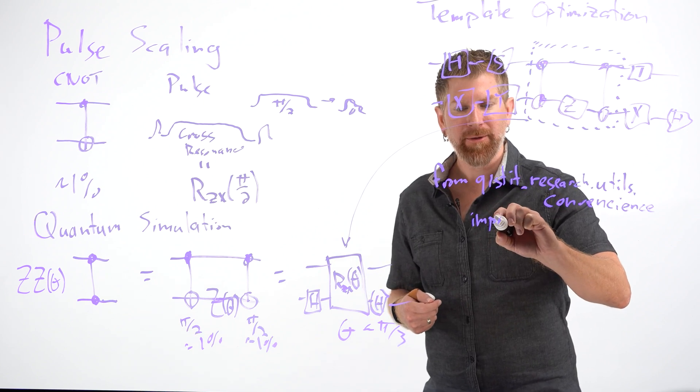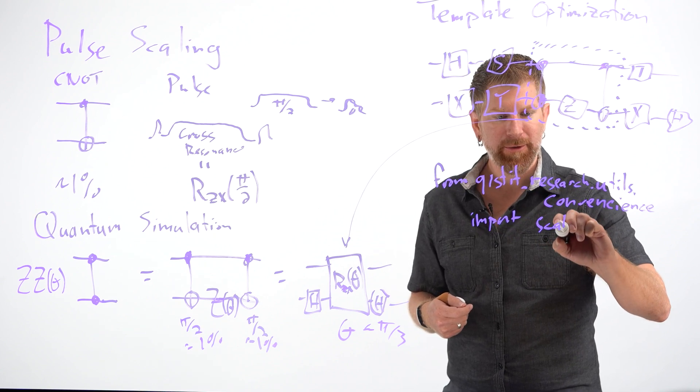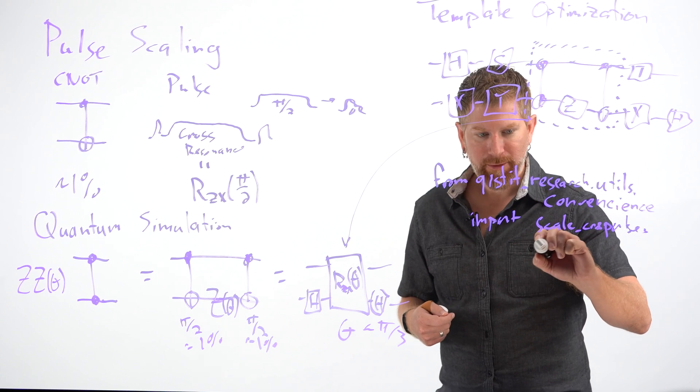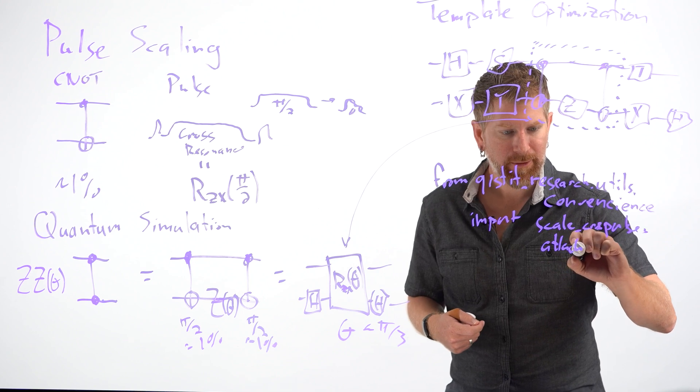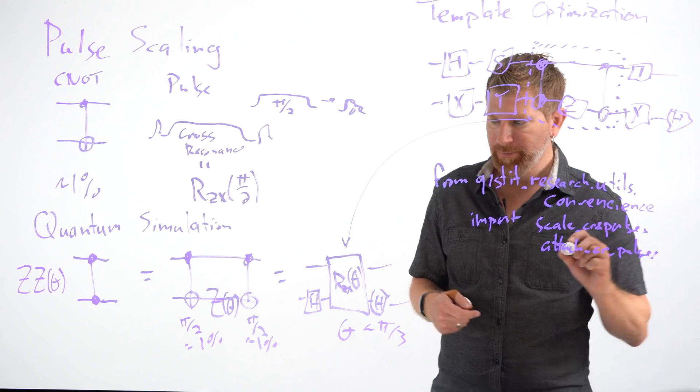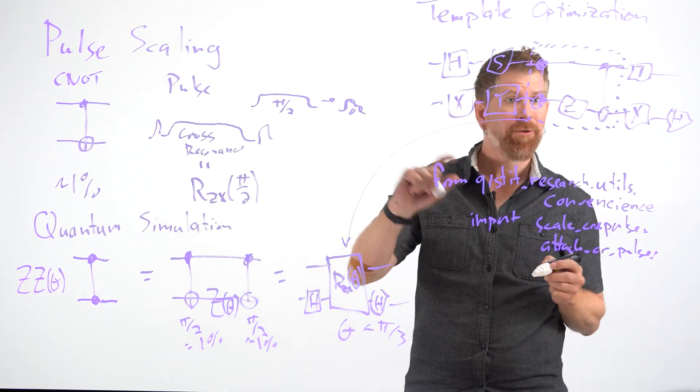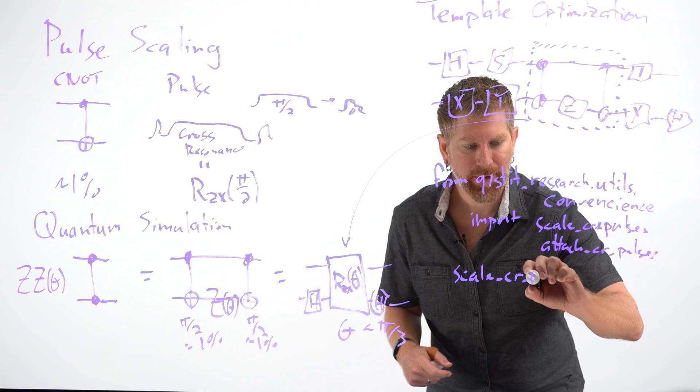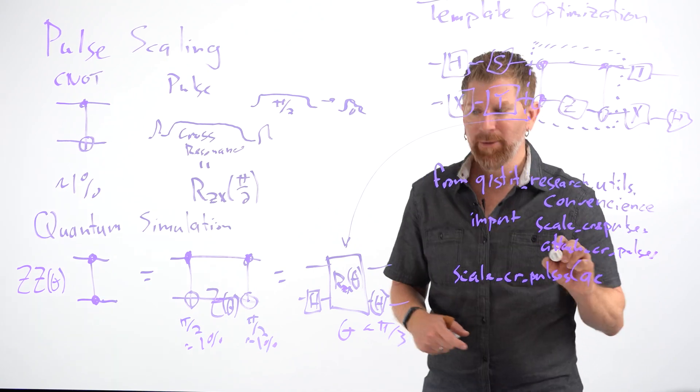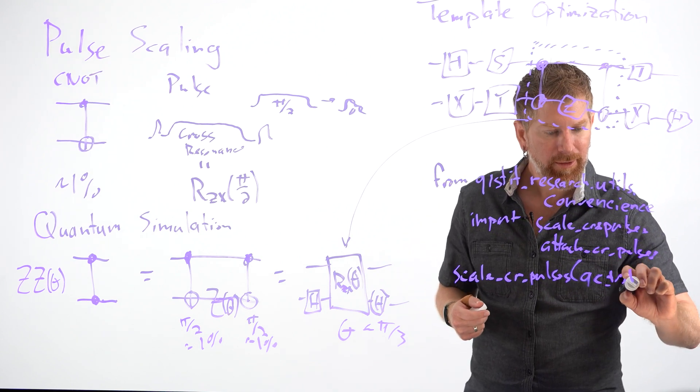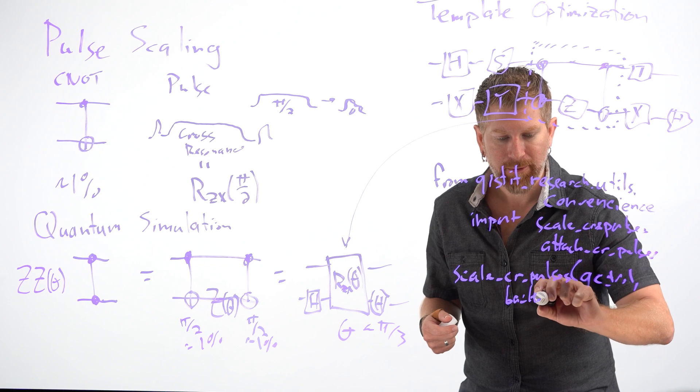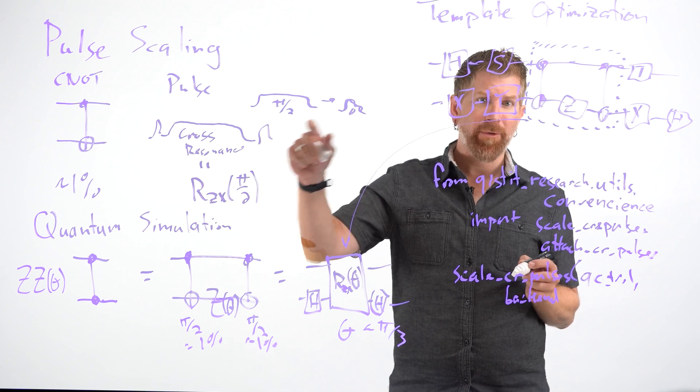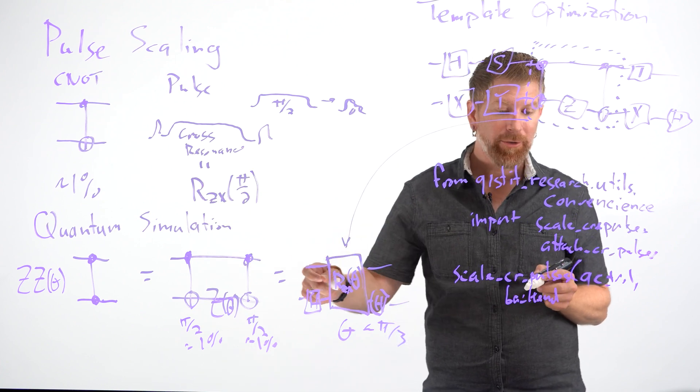We'll have two libraries. Import scale CR pulses. So basically, if you have a circuit, say a trotter step of your quantum simulation circuit, you can do scale CR pulses to your quantum circuit or a single trotter step of your quantum circuit. You can put the backend information. You need the backend information because each one of these cross resonance pulses is tuned up for different pairs of qubits on different machines, so you need to get the pulse level details from the backend.